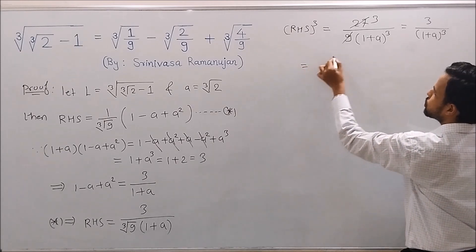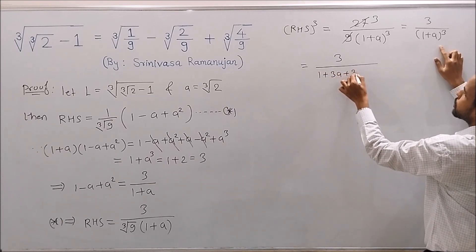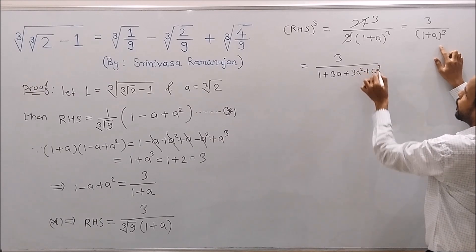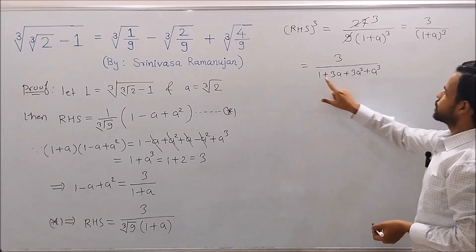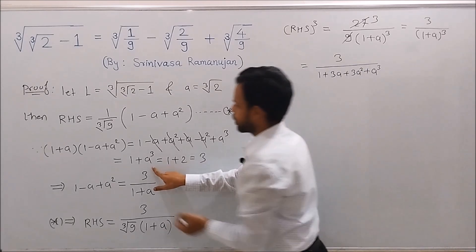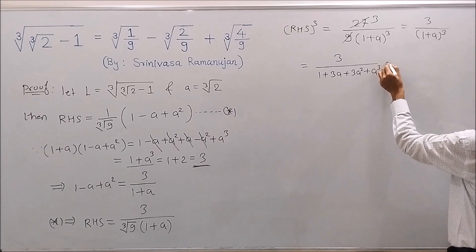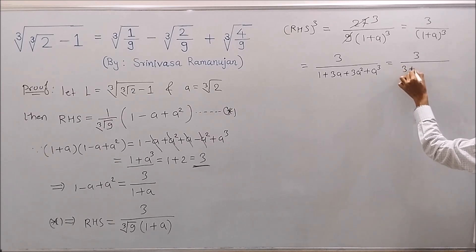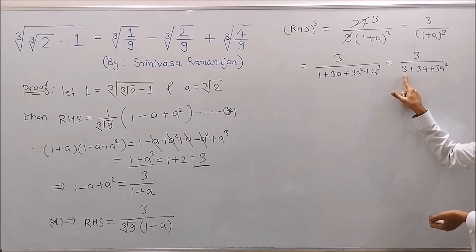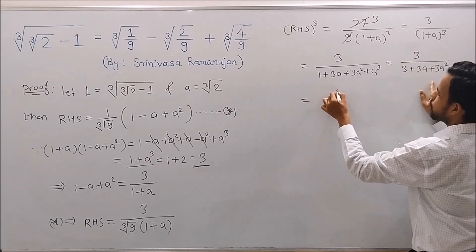Which equals 3 over (1 plus 3A plus 3A squared plus A cubed) by expansion of (1 plus A) cubed. Now as 1 plus A cubed equals 3, this becomes 3 over (3 plus 3A plus 3A squared). Taking 3 common from the denominator and canceling with the numerator, this becomes 1 over (1 plus A plus A squared).